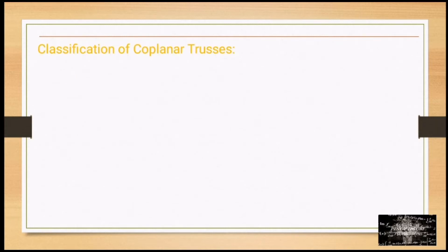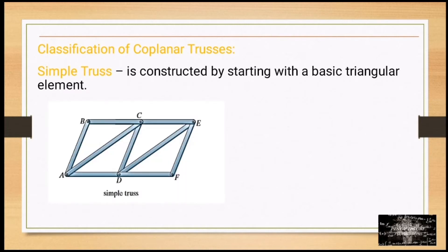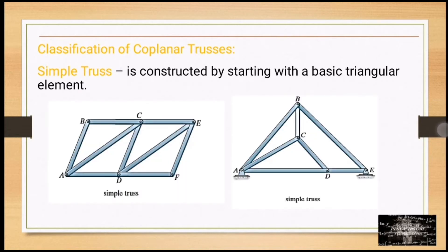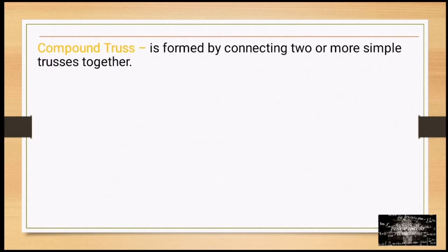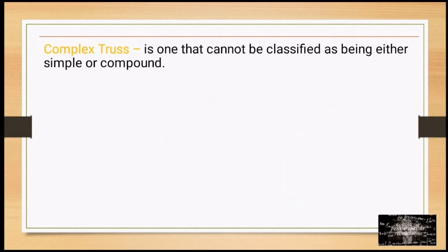Classification of coplanar trusses: A simple truss is constructed by starting with a basic triangular element. A compound truss is formed by connecting two or more simple trusses together. A complex truss is one that cannot be classified as being either simple or compound.